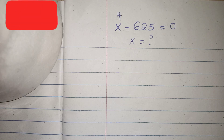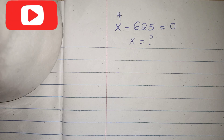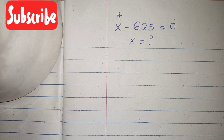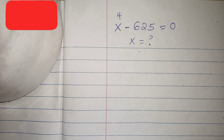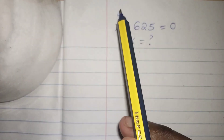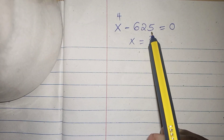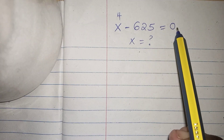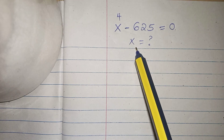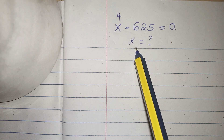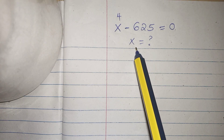Hello everyone, welcome or welcome back to my YouTube channel. Thank you for clicking in. Today I'm bringing you this math problem: we want to solve for all the values of x when given x to the power of 4 minus 625 is equal to 0.